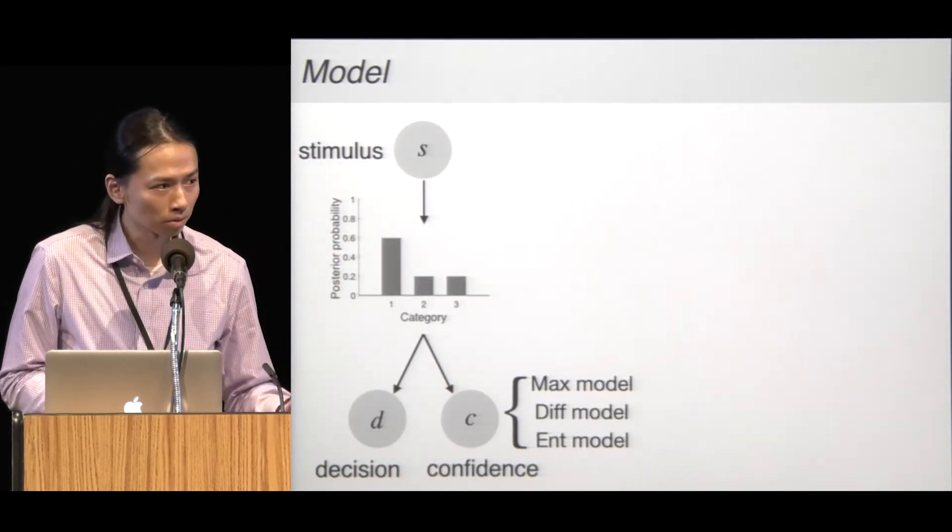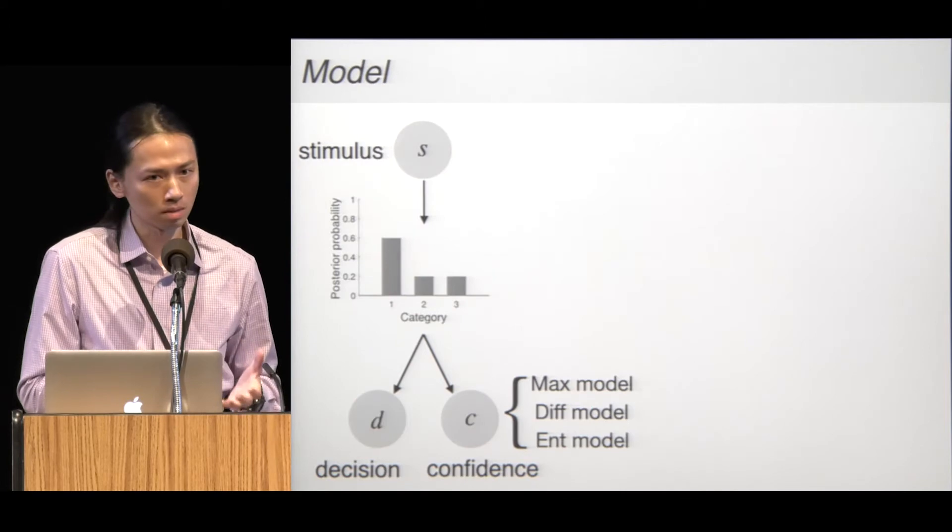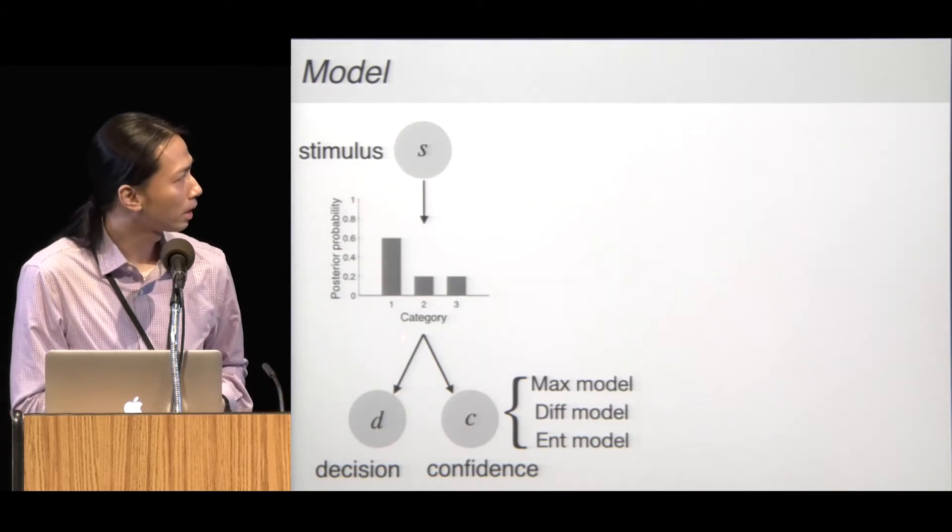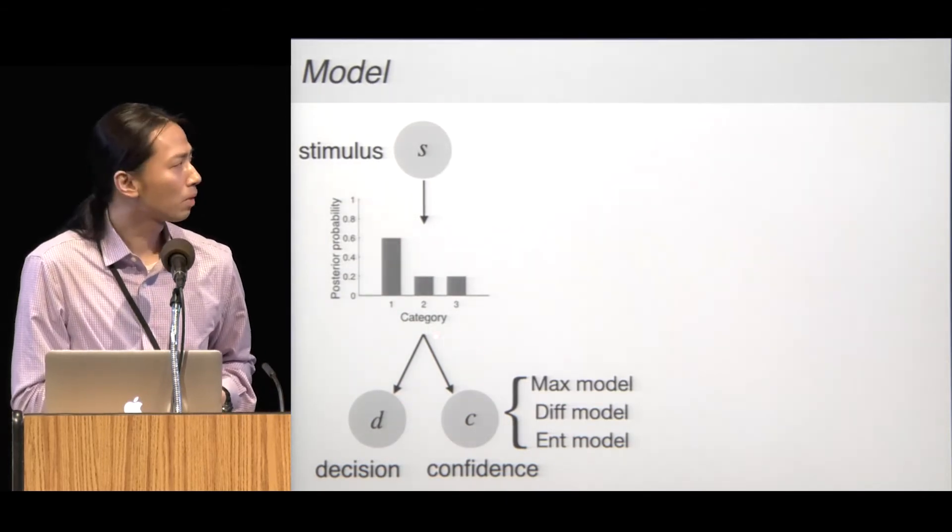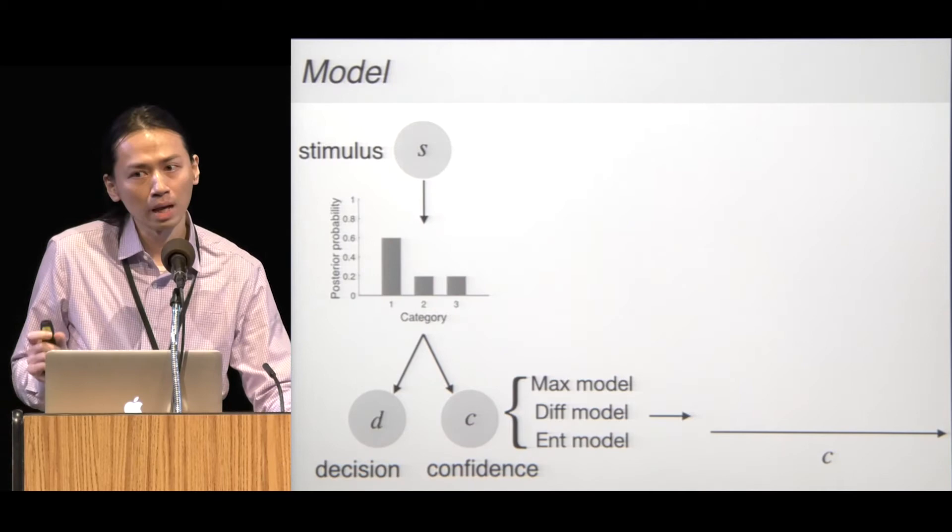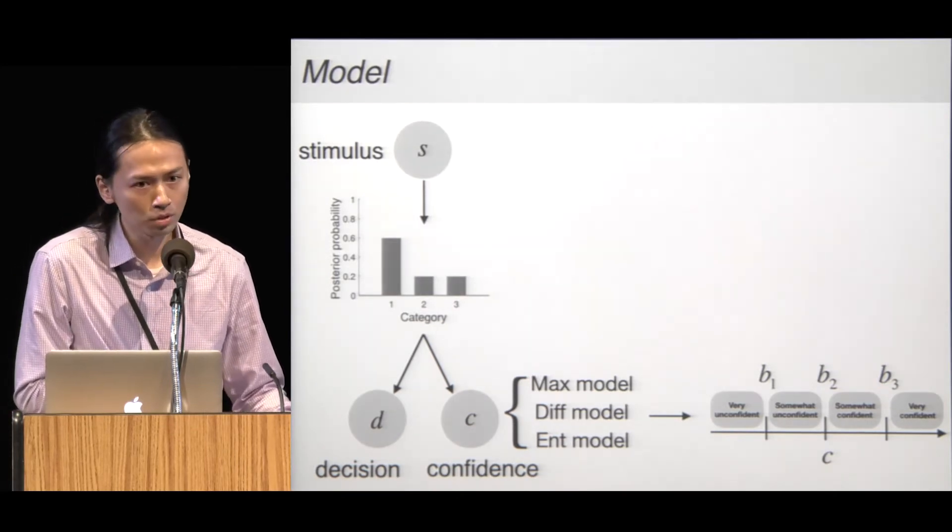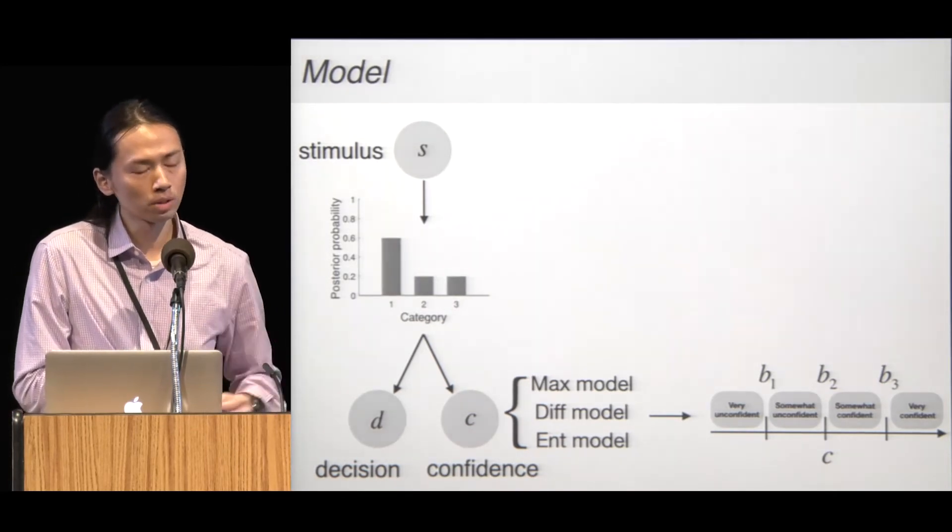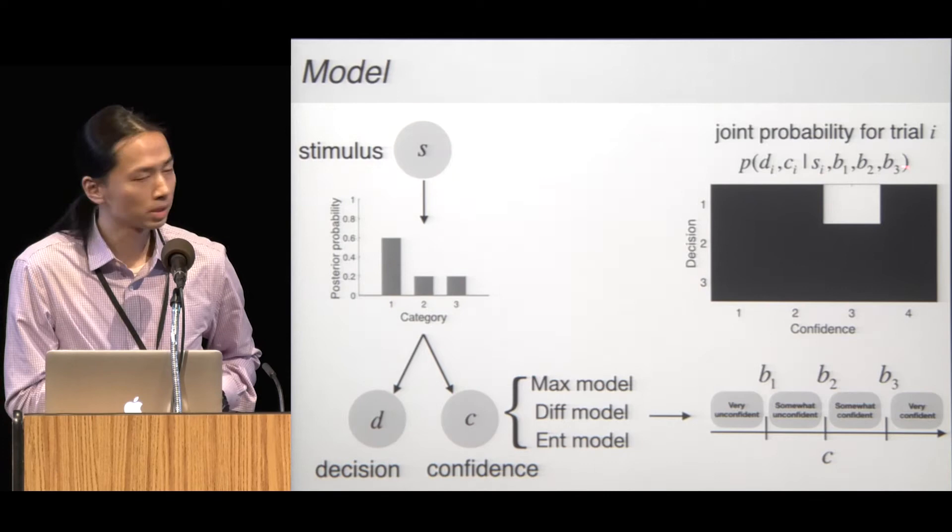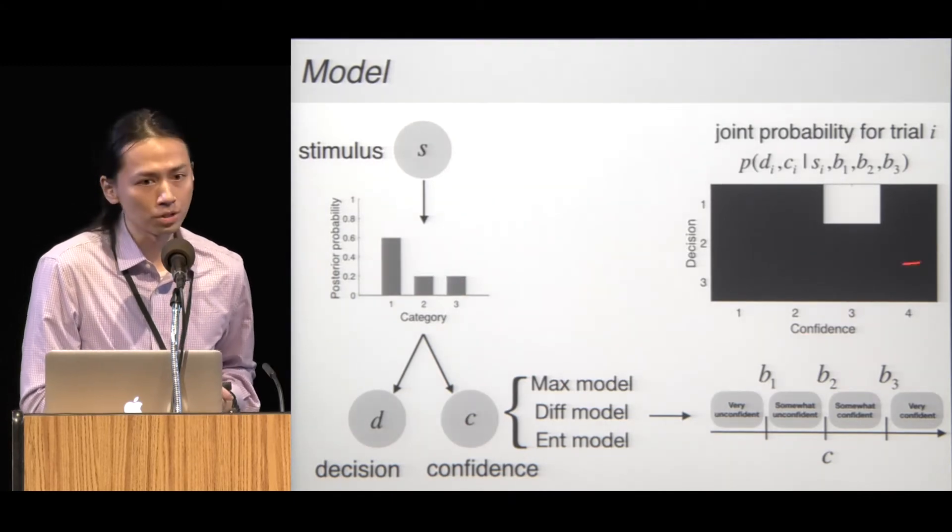To fit the data, all the models assume that observers will compute the posterior distribution based on the stimuli they saw. All the models use the same decision rule to categorize the group. They simply pick the group with the highest posterior. The models only differ in how confidence is reported. Because the confidence readout from the posterior distribution is a continuous variable, we fit three criteria as three parameters to map this continuous variable to four button presses. Given the stimulus in a trial and the criteria, we can compute the joint probability of the decision and the confidence report, and there are 12 combinations in total.